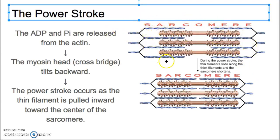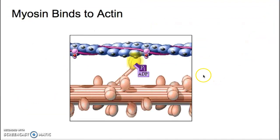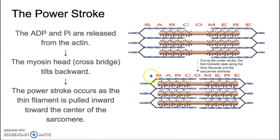Going through what happens molecularly: here's the myosin grabbing onto the actin. Once that happens, the ADP and phosphate fall off. When they fall off, that causes the shortening of the sarcomere — the power stroke.